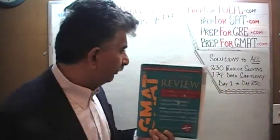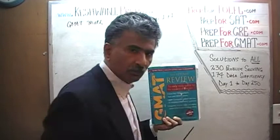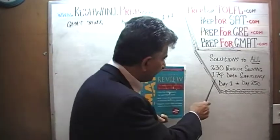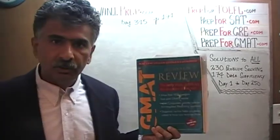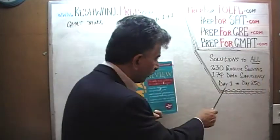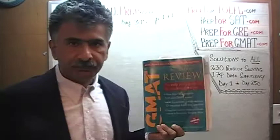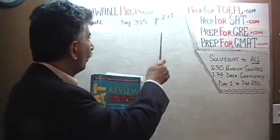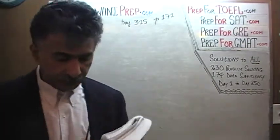The book contains 230 problem-solving questions and 174 data-sufficiency questions. We have already solved every single math problem from this book. If you are interested in watching the original solutions, you will find them from day number 1 through 250. Right now we are in the process of redoing the problems and we are on page number 171. Please turn to it.